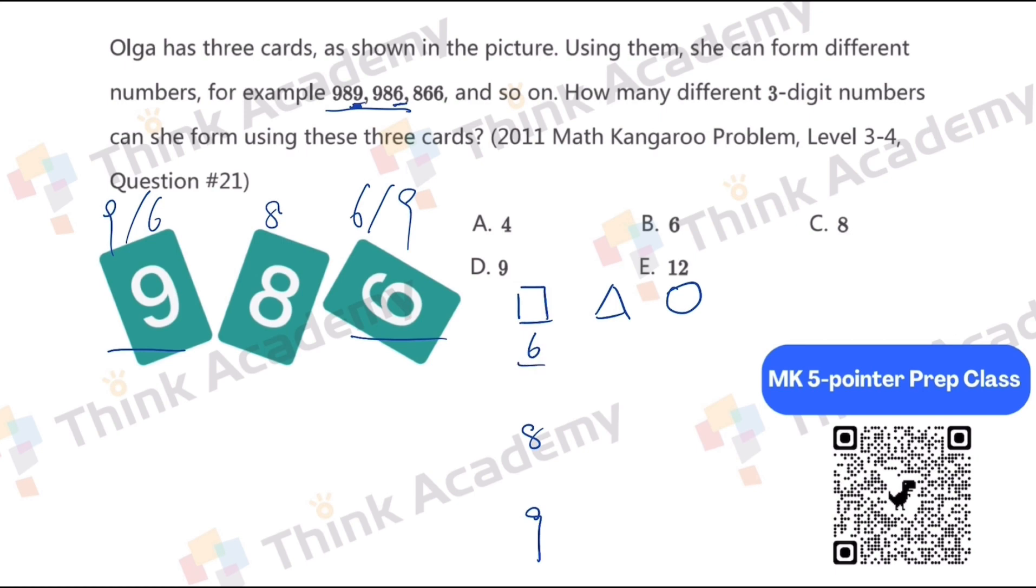For the 6, let's see we choose the first one as the 6. So how many options for the triangle? Also 3, because it can be 6 or 8 or 9. If it's 6, the circle can only be 8. But if it's 8, it can be 6 or 9. If it's 9, the 1's place can only be 8. So we got 1, 2, 3, 4 for this one.